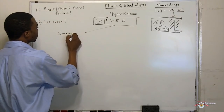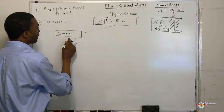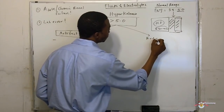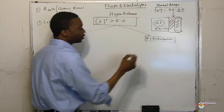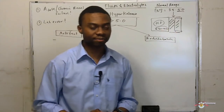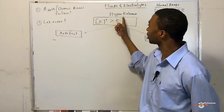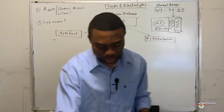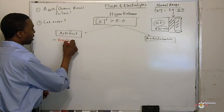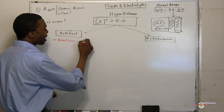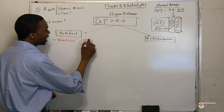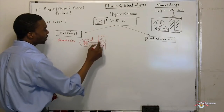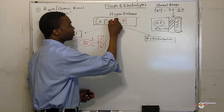If the problem is spurious or artifact — let's call it artifact or redistribution — the potassium is being redistributed from the intracellular compartment to the extracellular compartment. When you see a patient with a very high potassium level, the first thing you should think about is: was this a lab error? If it's a lab error, it's usually due to hemolysis. Why hemolysis? Because red blood cells have a lot of potassium in them, and when they lyse open, they release all that potassium into the bloodstream, causing hyperkalemia when potassium is greater than 5.